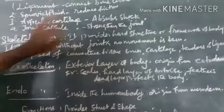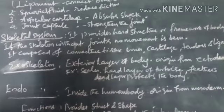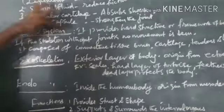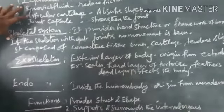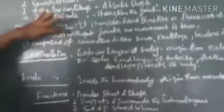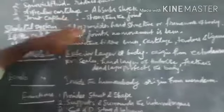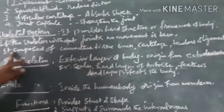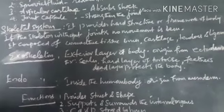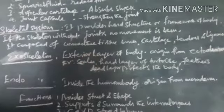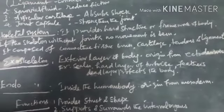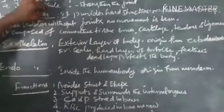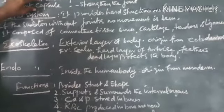The next one is skeletal system. The skeletal system provides the hard structure and framework of the body. If the skeleton is without joints, no movement is seen. The significance of human being will be no more than a stone.